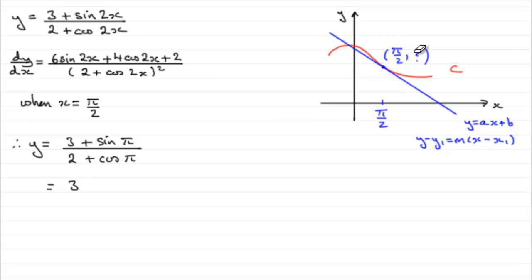Let's update our diagram here. Let's put in that that y value is now 3. So we need to get the gradient m. And the gradient m, at any point on the curve, is given by dy/dx. But we're looking at this particular point, so that's when x is π/2.